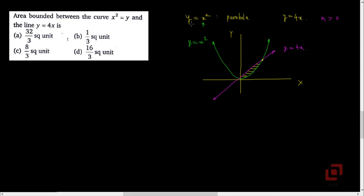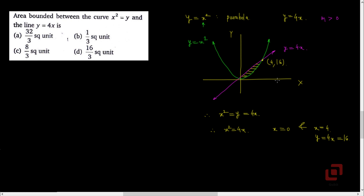We solve y equal to x squared and y equal to 4x simultaneously, giving x squared equal to 4x. Solving this quadratic gives x equal to 0 and x equal to 4. Origin is the first point of intersection. If x equals 4, the y-coordinate is 4 times 4 which is 16. So this point is (4, 16). Dropping a perpendicular from (4, 16) to the x-axis gives the point (4, 0).